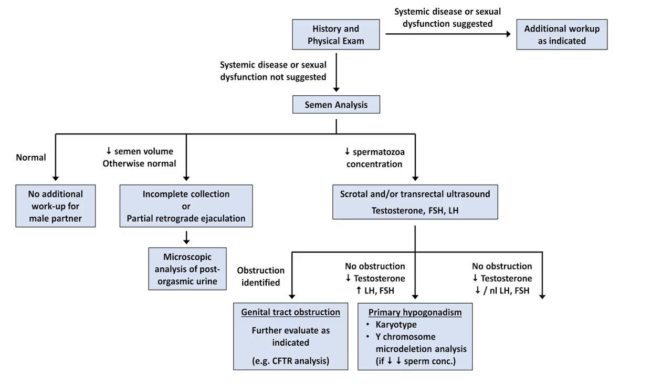And if there is no obstruction, testosterone is low, and LH and FSH are either low or normal, that is consistent with secondary hypogonadism. In that case, the next steps are a prolactin level, to consider screening for other endocrinopathies that could uncover more global pathology of the hypothalamic-pituitary axis, and to consider sellar imaging, such as an MRI scan. The sella is the tiny concavity in the base of the skull that is the location of the pituitary gland.